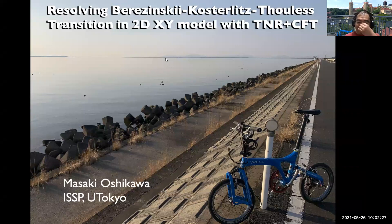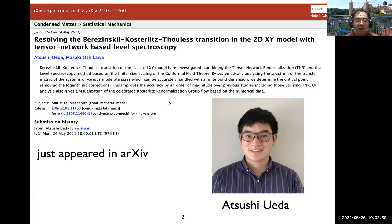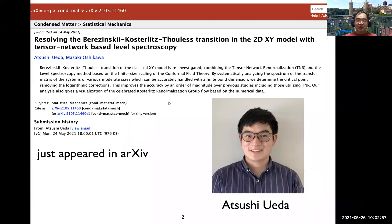Most of you are talking about fractals, SPT, or whatever recent topics, but this BKT transition is a very old subject. However, it is actually the root of topological physics — the first historical example of a topological phase transition. I want to revisit this topic with modern concepts and modern tools.